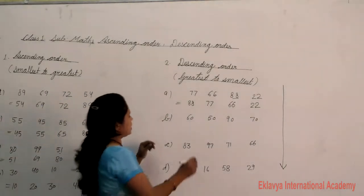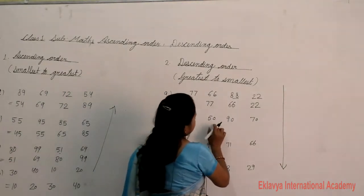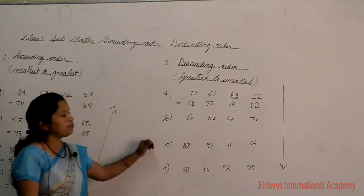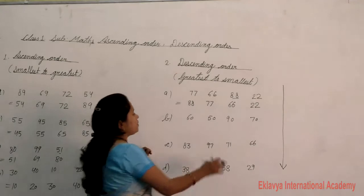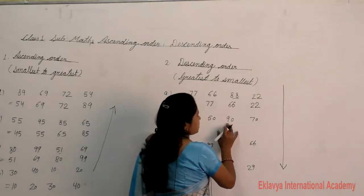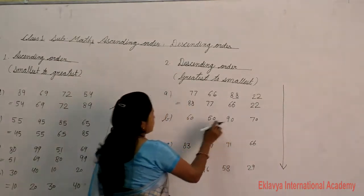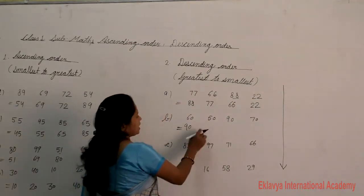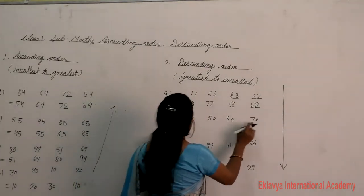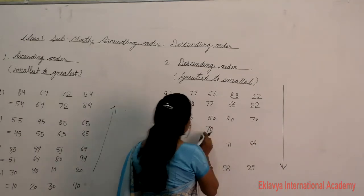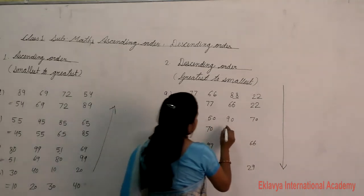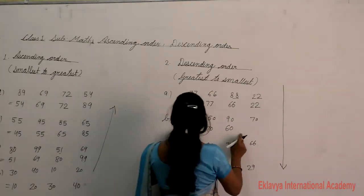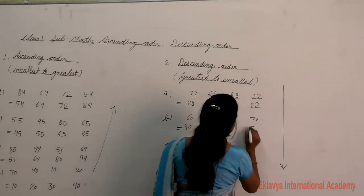Next example in descending order: 60, 50, 90, 70. In descending order we choose the biggest number first. The biggest number is 90. After 90 comes 70, then 60, and then 50.